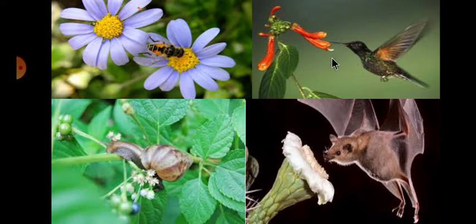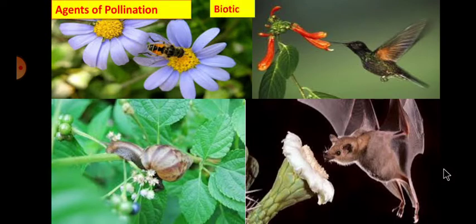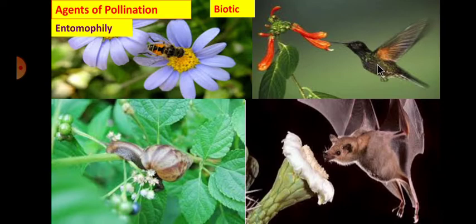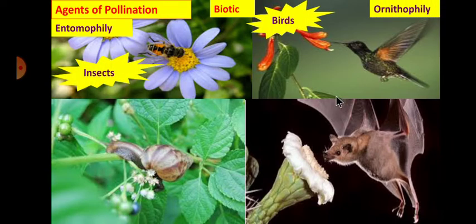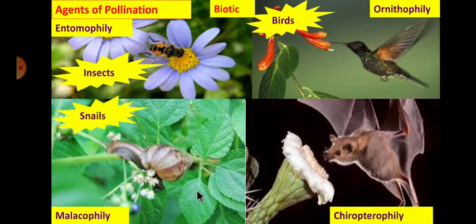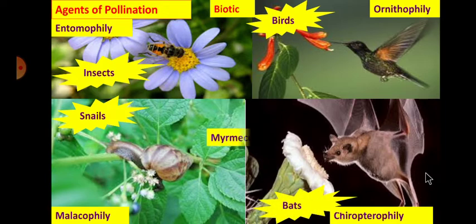You can see a honeybee doing pollination, here it is by a bird, here it is by a snail, and here it is by a bat. If insects transfer the pollen grain it is called entomophily. If pollination is done by birds it is called ornithophily. The third type is malacophily, where snails help in pollination, and the last is chiropterophily, where bats help in cross-pollination.